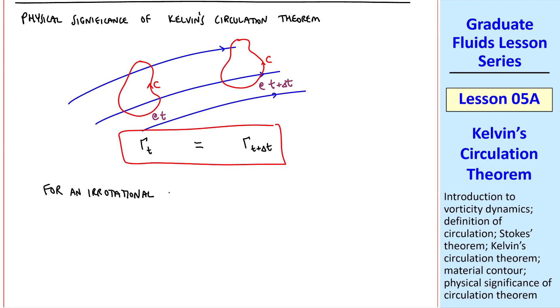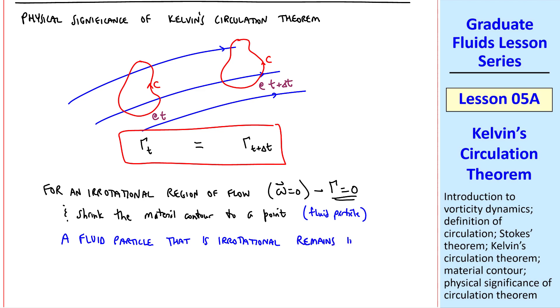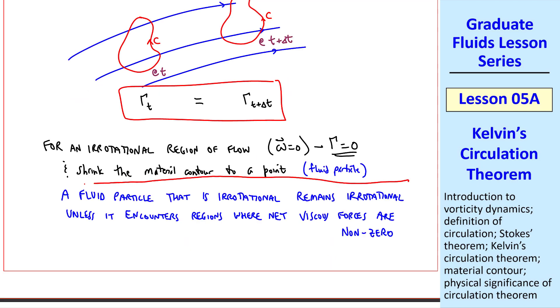We can simplify for an irrotational region of flow, where the vorticity vector is zero. Then gamma, the circulation, must also be zero. And let's shrink the material contour to a point. In other words, let this contour go to zero size, so that we're talking about a fluid particle. Then we can write this statement: a fluid particle that is irrotational remains irrotational, unless it encounters regions where net viscous forces are non-zero. This statement is very useful, and is also a direct consequence of Kelvin's circulation theorem.